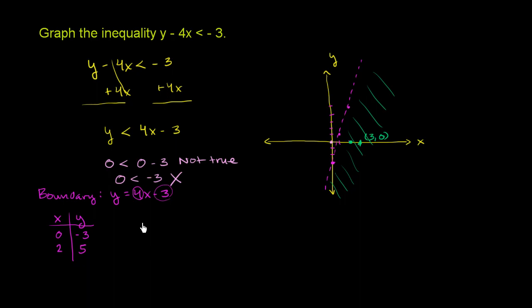So we have y is 0. 0 is less than 4 times 3 minus 3. 0 is less than 12 minus 3. 0 is less than 9, which is definitely true. So that point does satisfy the inequality.